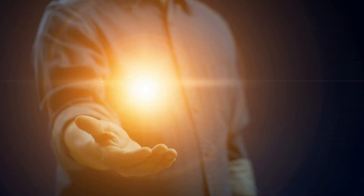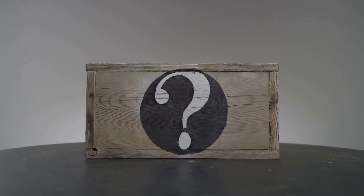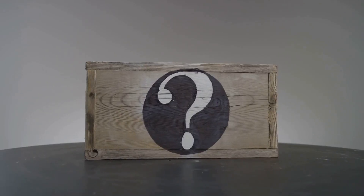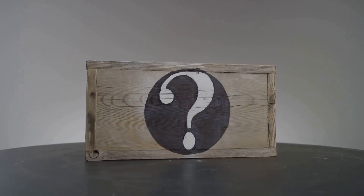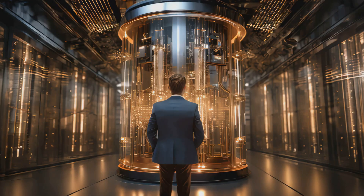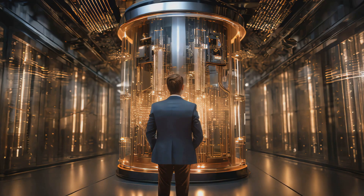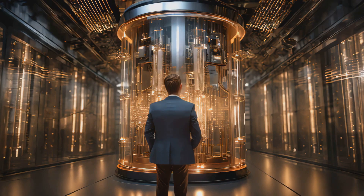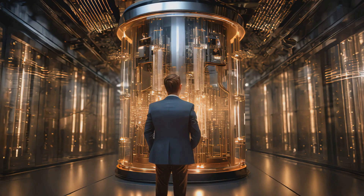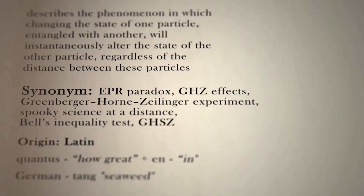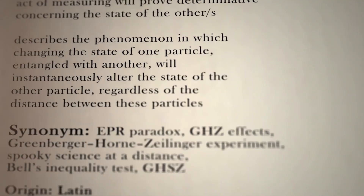Take Schrödinger's famous cat thought experiment. The cat, inside a box, is both alive and dead until you open it and check. This illustrates how quantum particles exist in multiple states at once, only settling into one when observed. It's all about probabilities, not certainties.